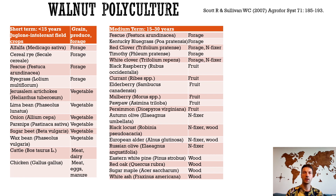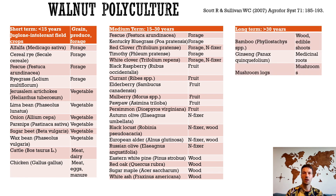Mulberry, pawpaw, and American persimmon are tolerant to black walnut. After 30 years, when walnut becomes shady and allelopathic, a few ephemerals and late-ripening fruits may be interplanted to utilize sunny periods in walnut orchards in spring and fall, as well as American ginseng, shiitake, and oyster mushrooms, which benefit from shady and moist conditions in summer.